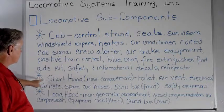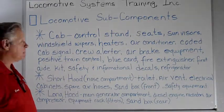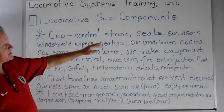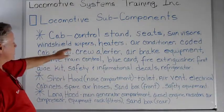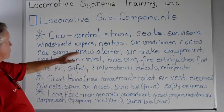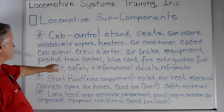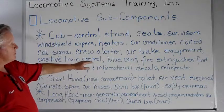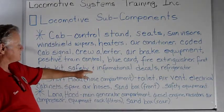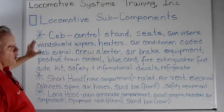Today's video we're going to talk about locomotive subcomponents. Remember, three major areas: we have the cab, the short hood, and also the long hood. Starting in the cab, we're going to look at the control stand, seats, sun visors, windshield wipers, heaters, air conditioners, coded cab signal, crew alerter, air brake equipment, pilot train control, and blue card.